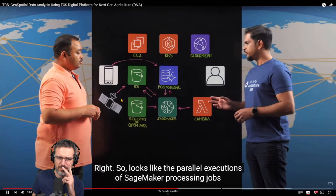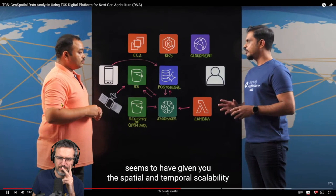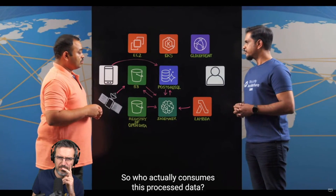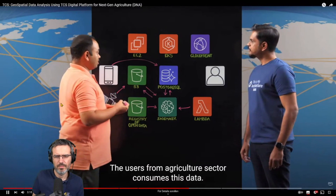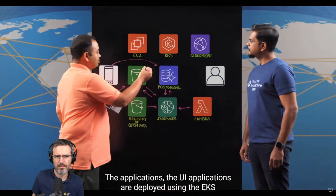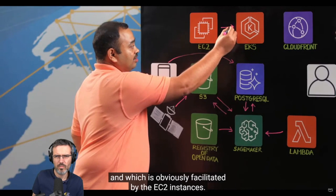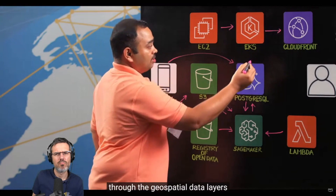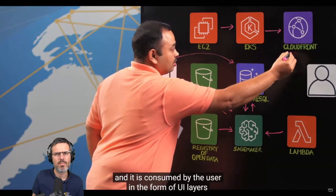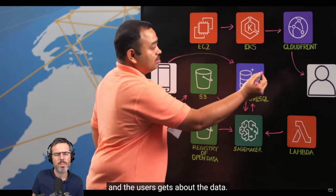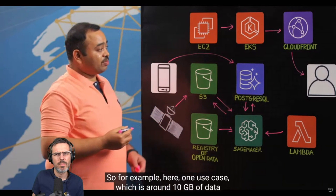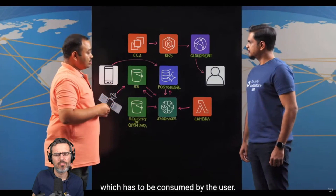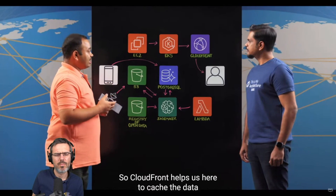The parallel executions of SageMaker processing jobs seem to have given you the spatial and temporal scalability which was much required. Users from the agriculture sector consume this data. The UI applications are deployed using EKS, facilitated by EC2 instances. Data moves from EKS to CloudFront through geospatial data layers, and the user consumes it in the form of UI layers. For one use case, there is around 10 GB of data that CloudFront helps cache and provide to the user efficiently.